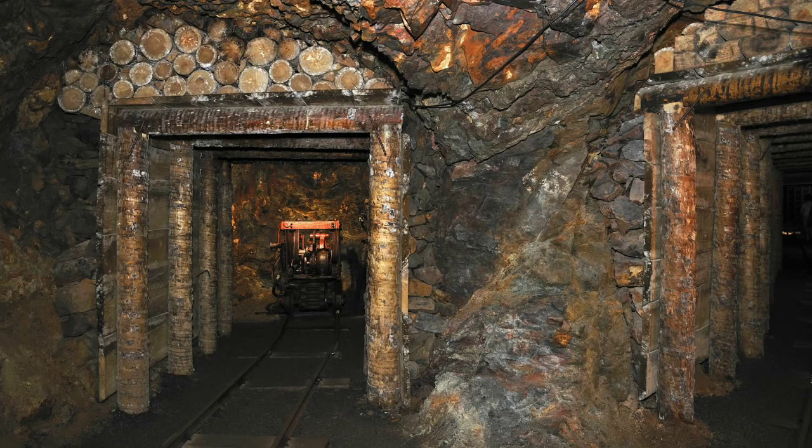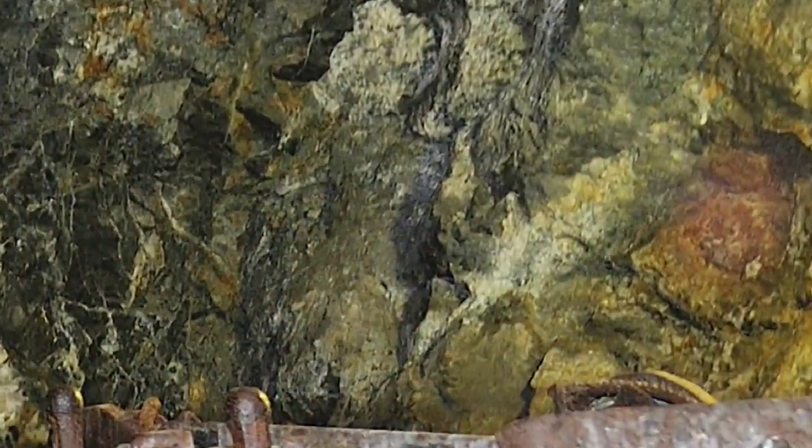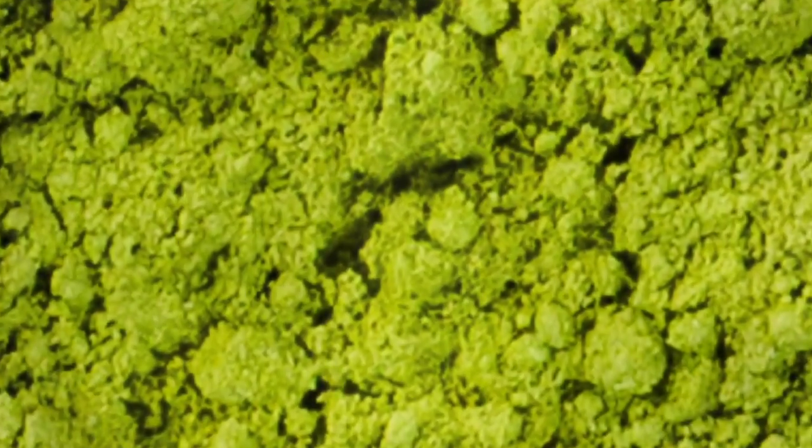The nuclear fuel cycle begins with naturally occurring uranium mined from deep within the Earth. Natural uranium can't sustain a nuclear reaction on its own, though. Its fissile isotope, U-235, must be concentrated to between 3 and 5 percent, a process known as enrichment.